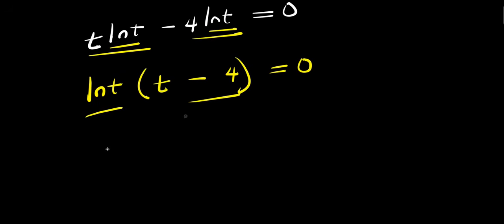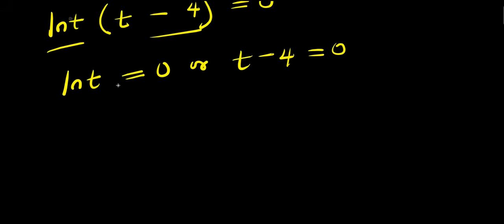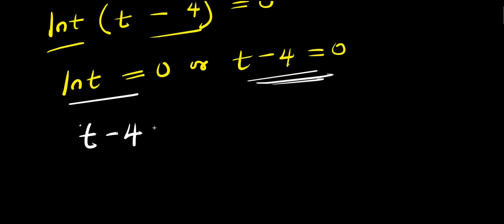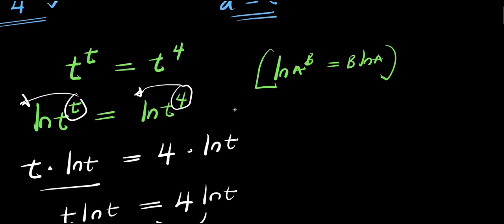Setting each factor equal to zero: ln(t) equals 0, or t minus 4 equals 0. Solving t minus 4 equals 0 first, we get t equals 4. This is our first solution, and it's the same one we got using the identity method.